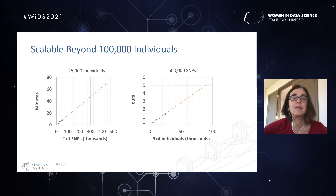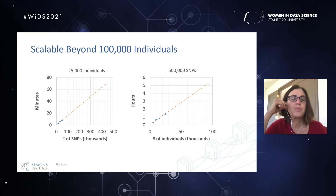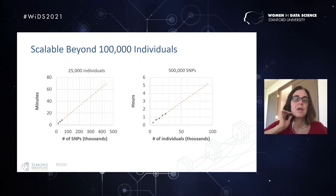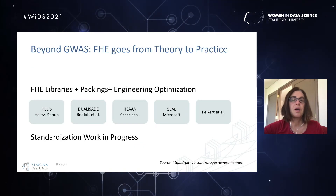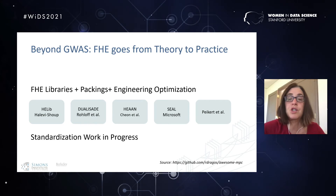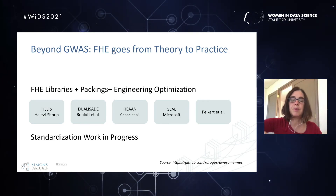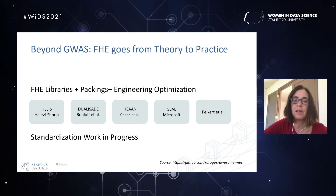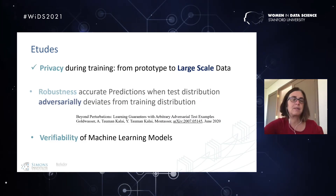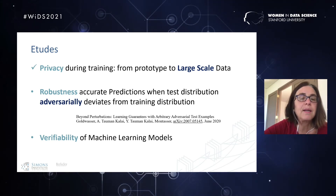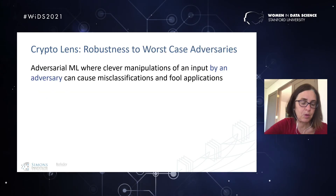We can scale well beyond what we currently know how to do, in terms of both number of individuals and number of SNPs. Beyond GWAS specifically, there are now homomorphic encryption libraries that use extensive engineering optimization alongside theory, enabling you to build applications like logistic regression on various types of data and use the library to guarantee privacy. Now let me move to the second topic: robustness.